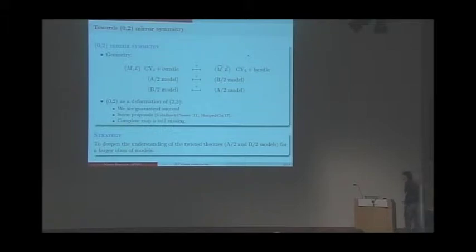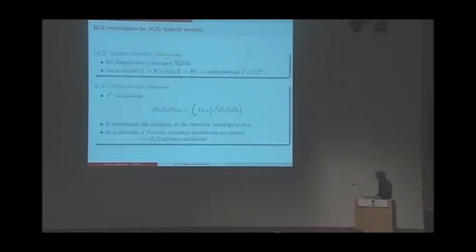My personal strategy to tackle this is to try to understand at least one side of the map for a larger class of models. I've been working with my advisor on developing this for zero two theories. We completely solved the B model for the zero two hybrids, and I would like to stress that there are a subclass of these theories which preserve some splitting in the moduli space. Thank you.